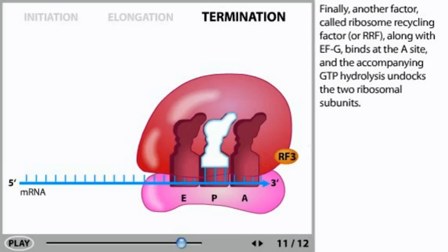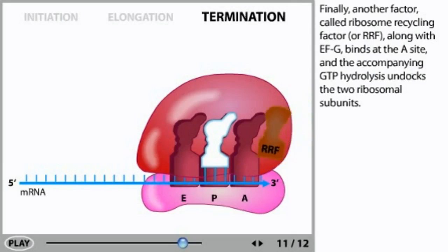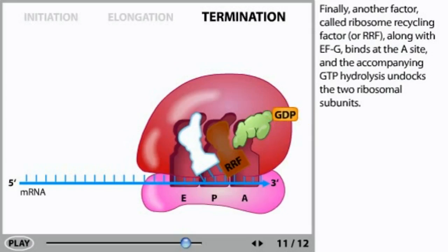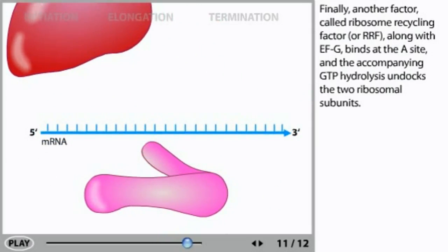Finally, another factor called ribosome recycling factor, or RRF, along with EFG binds at the A site, and the accompanying GTP hydrolysis undocks the two ribosomal subunits. IF3 then reassociates with the 30S subunit, preventing the 50S and 30S subunits from coming together again. The liberated ribosomal subunits are now free to diffuse through the cell, ready to bind yet another mRNA and begin the translation sequence anew.